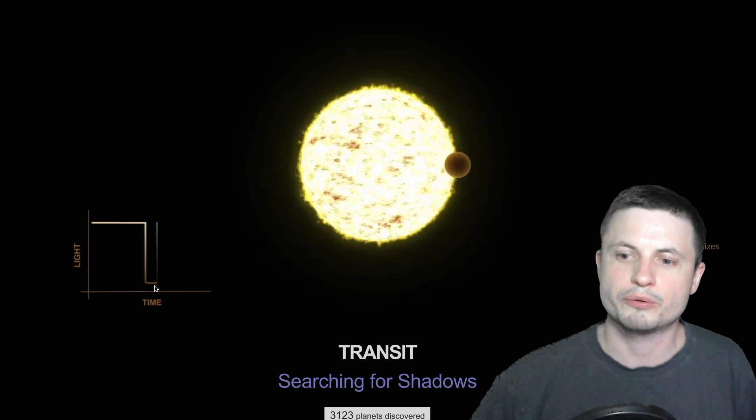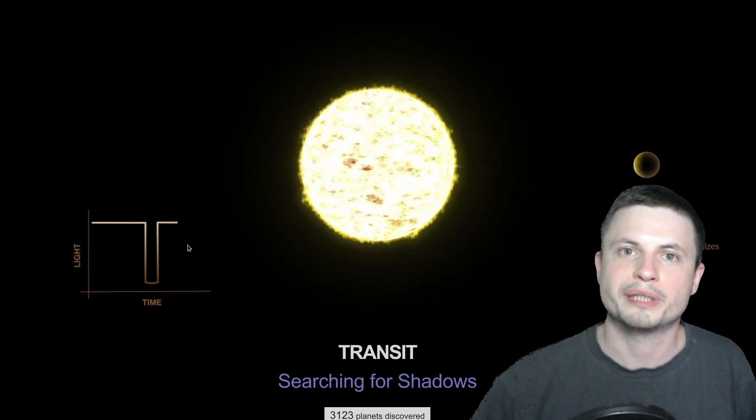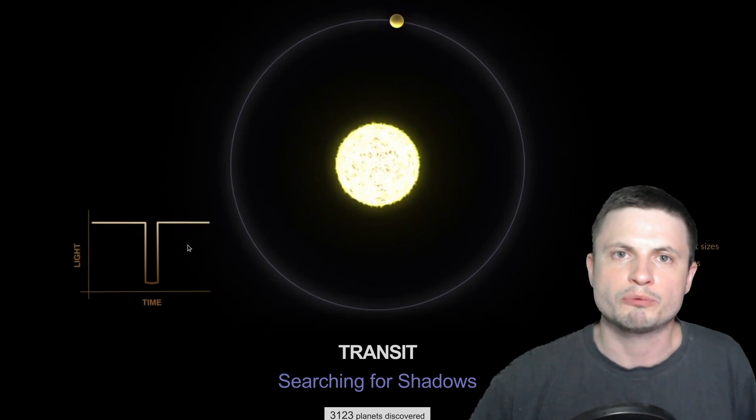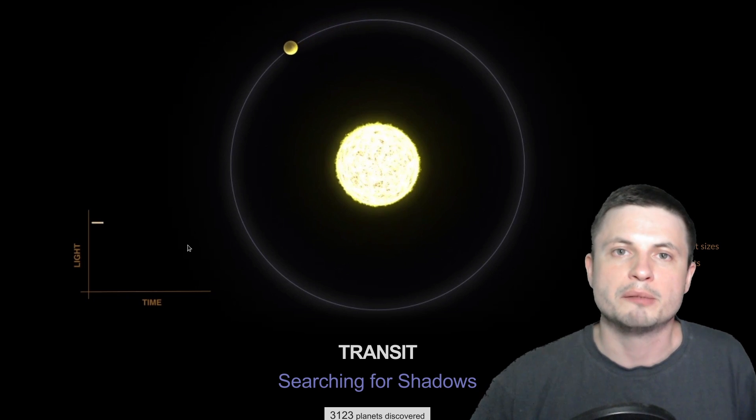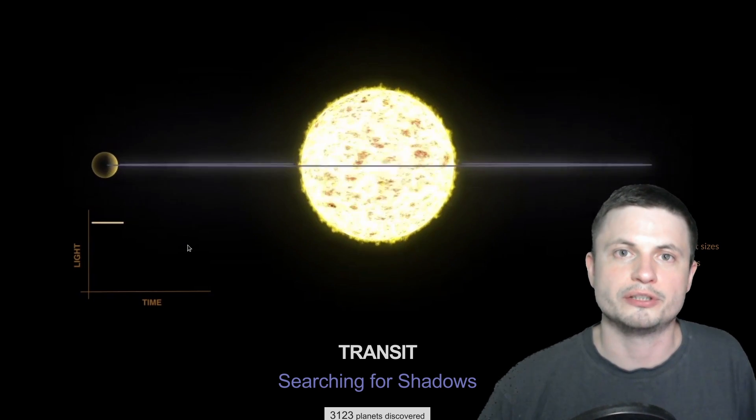You can kind of see how we now detect this dip in here, which represents an exoplanet that passed in front of the star and we've discovered over 3000 planets this way already, mostly using the Kepler telescope, but now we have another telescope known as TESS doing the same.